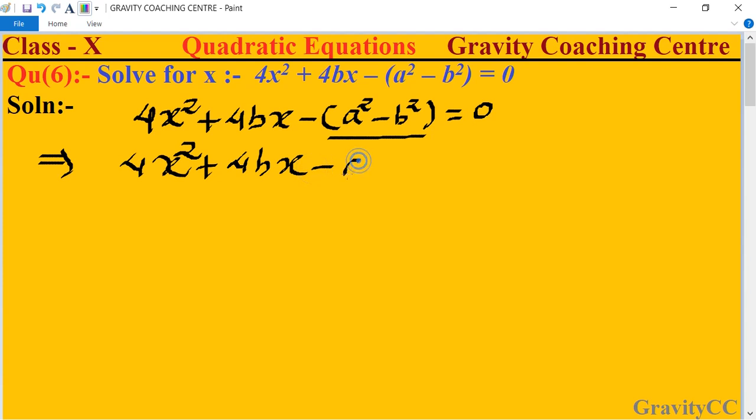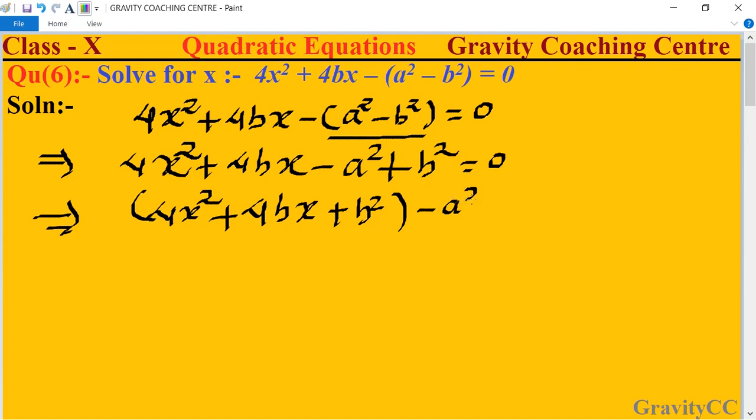Minus a² plus b². Now we separate the terms: 4x² plus 4bx plus b², and the other part is minus a² equal to zero.